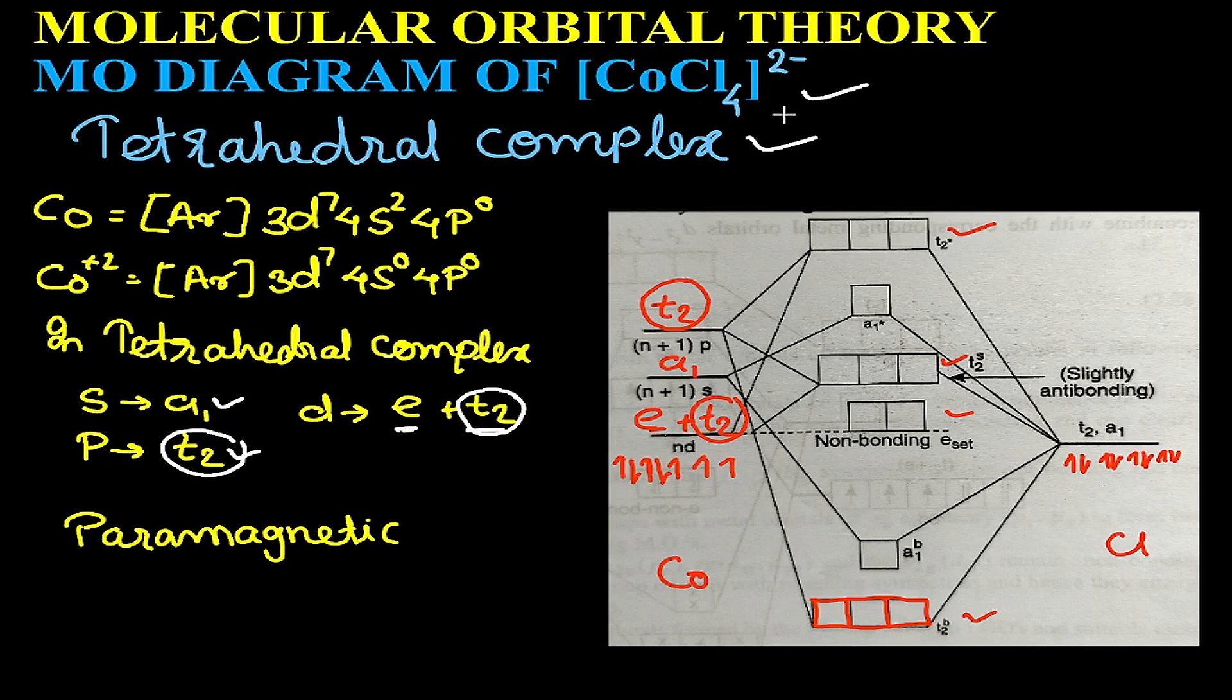In CoCl4 2-, there are four Cl ligands that would bring four pairs of electrons, and these four pairs of electrons will be donated in the bonding molecular orbital.